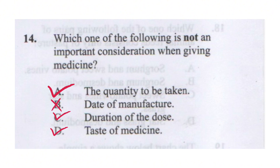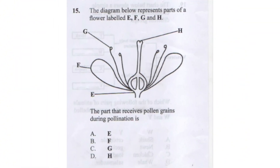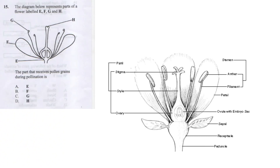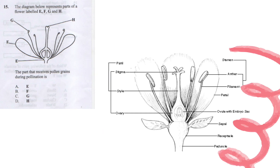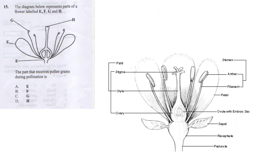The diagram below represents parts of a flower labeled E, F, G, and H. The question asks which part receives pollen grains during pollination. A flower diagram shows the pistil (stigma, style, ovary), petals, stamen (anther and filament), ovule with embryo, sepal, receptacle, and peduncle.